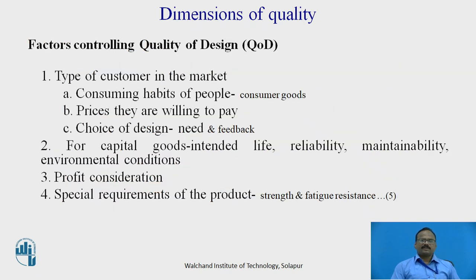What are the factors controlling quality of design? The first factor is the type of customer in the market — what are the consuming habits of people? We must do market research to study the consuming habits of people. This is specifically true for consumer goods; FMCG industries look after the consuming habits of people. Second, prices they are willing to pay — it varies from city to city and from nation to nation, and based on that we can have a quality of design.